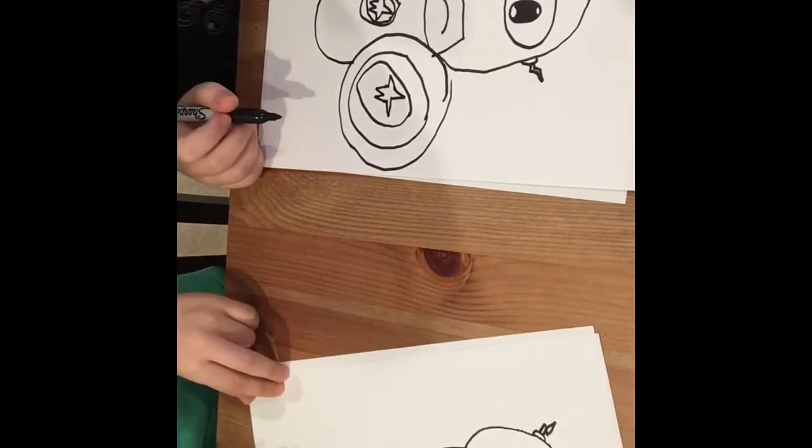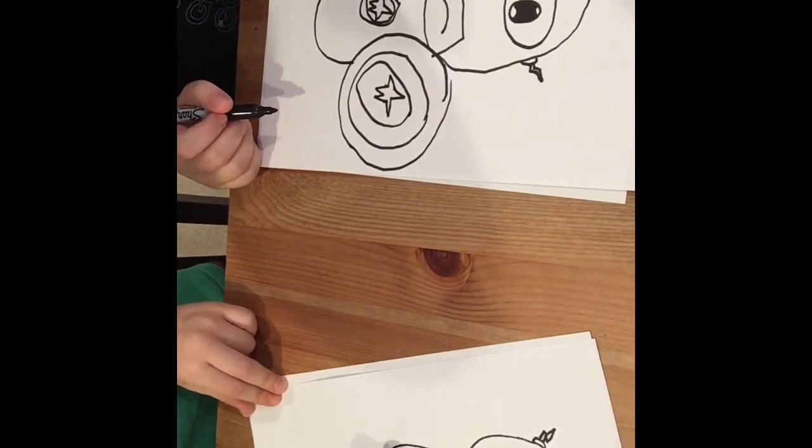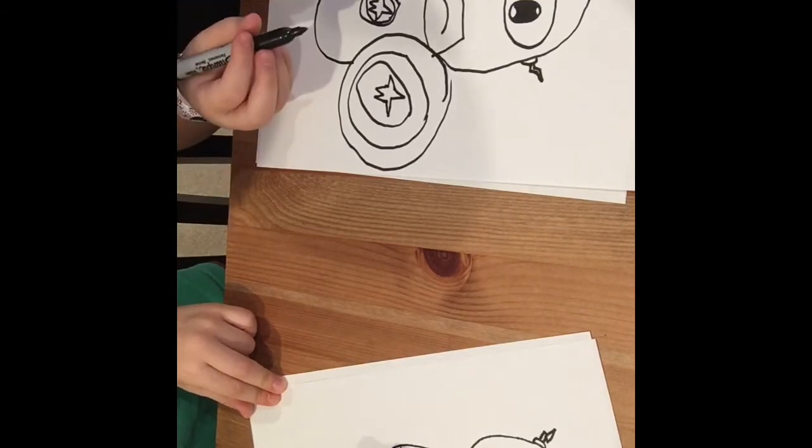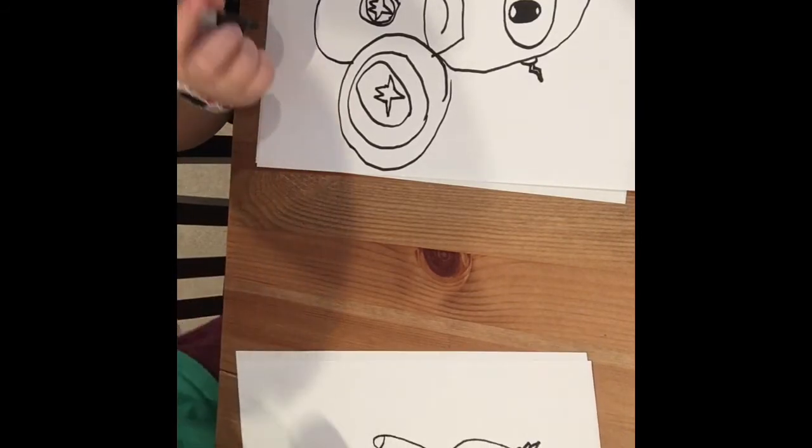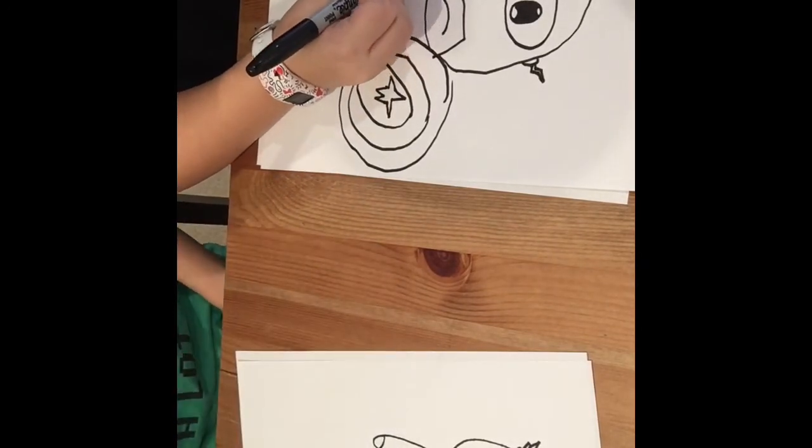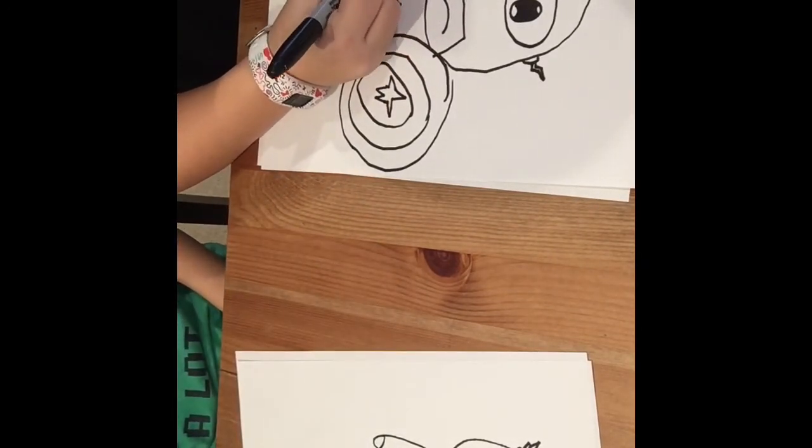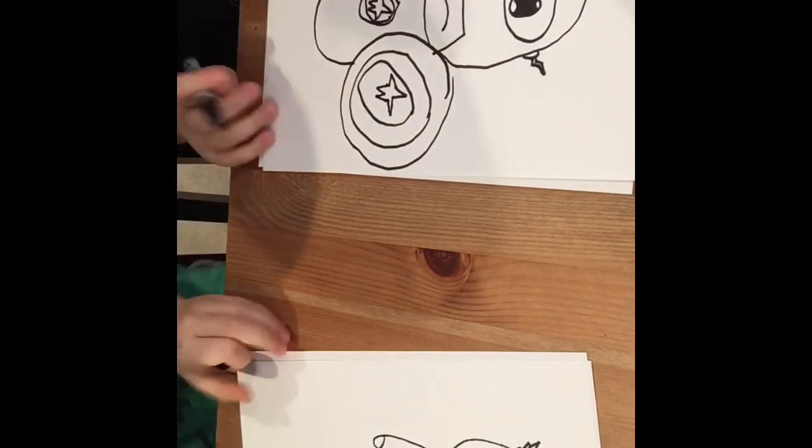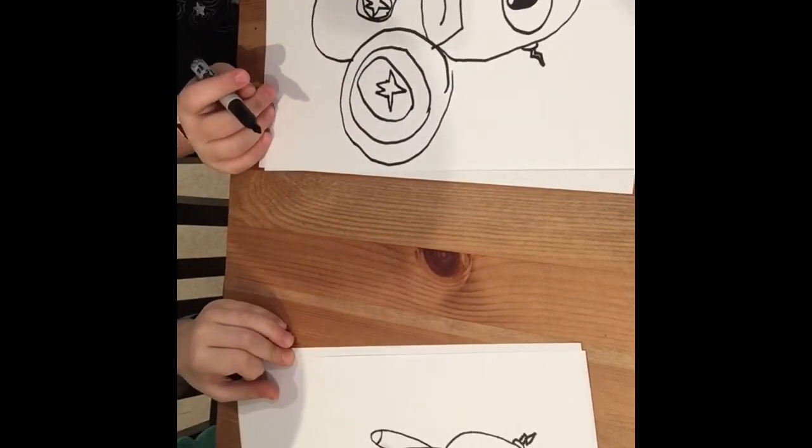And then we're gonna draw the hand. I just wanna do it easy. I think he has a belt, so I'm just gonna draw that.